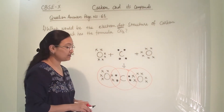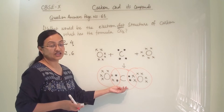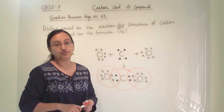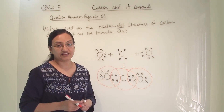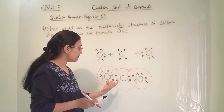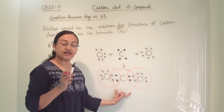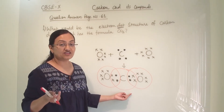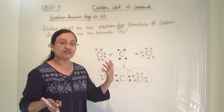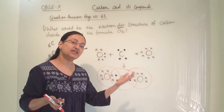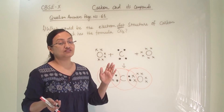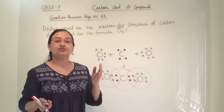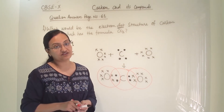That is also an important point — why they have shared this way. This we will discuss in combining capacity and valency. Check my video based on combining capacity and valency, which will give you an idea of how an atom forms a molecule via transfer of electrons or via sharing of electrons, and how many electrons they will share or transfer to form a bond.